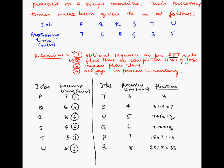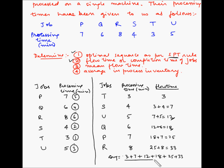For part 3, we find the mean flow time, which is the average of all flow times. So: 3 plus 7 plus 12 plus 18 plus 25 plus 33, divided by 6, equals 16.33 minutes. This is the mean flow time.